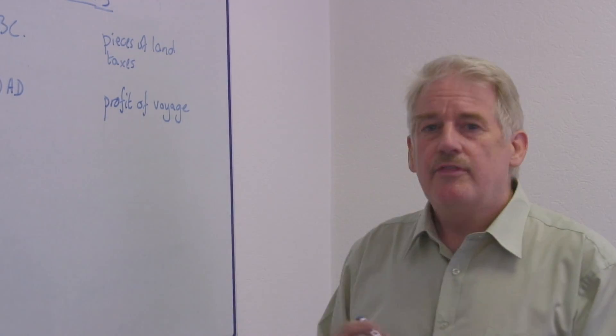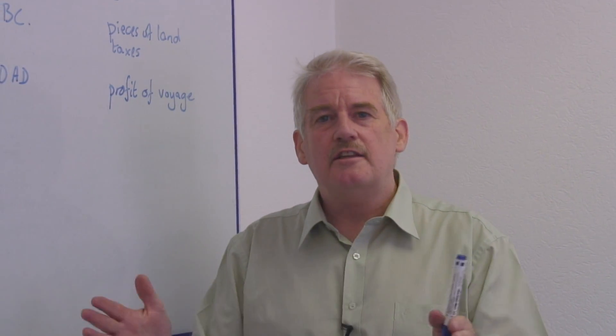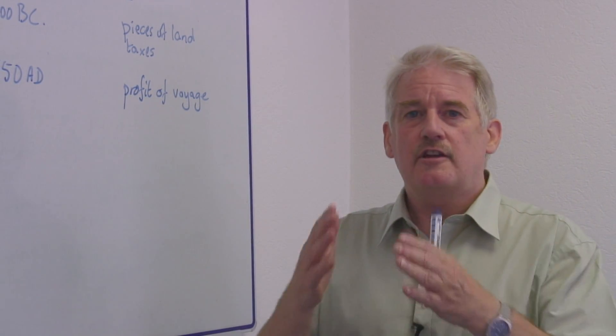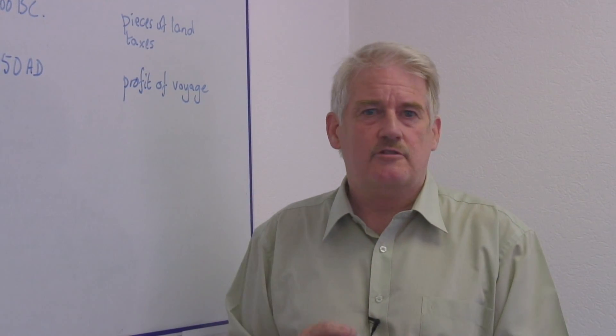So when the ship returned, the profits were added up and were divided into fractions, and each fraction was given to each person who'd paid that amount of money.